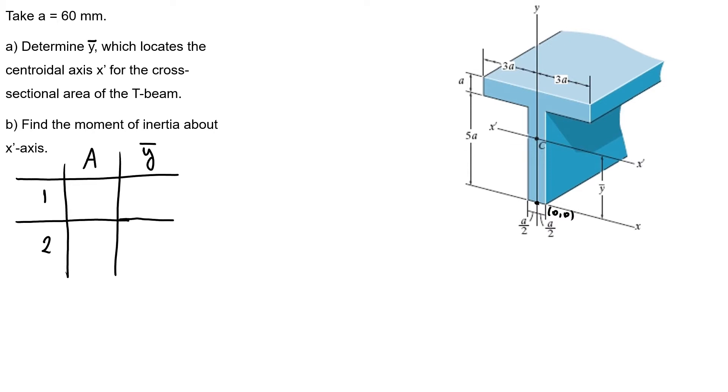Here I have my area and here I have my y-bar. My first area will be 5a square and my height is half of the area, 5a over 2. My second area is 6 times a, so 6a square, and my y-bar is 5a plus a over 2.